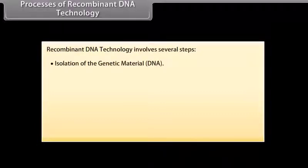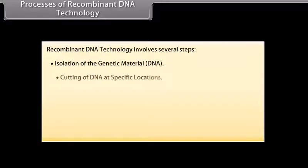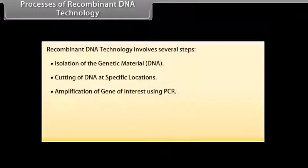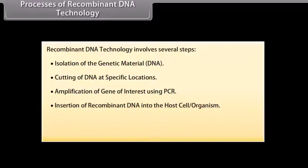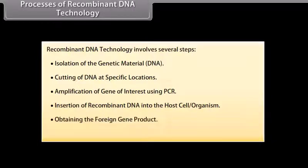Processes of recombinant DNA technology. Recombinant DNA technology involves several steps: isolation of the genetic material, cutting of DNA at specific locations, amplification of gene of interest using PCR, insertion of recombinant DNA into the host cell organism, obtaining the foreign gene product, and downstream processing.